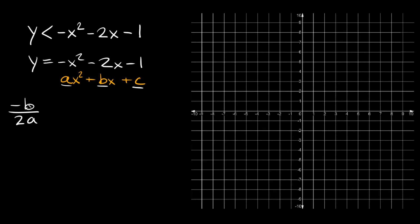Negative b over 2a tells us where our x-coordinate is, so let's plug this in. We have a negative sign, so let's bring that over. What's b in this case? B is negative 2 — remember to include that negative sign, or whatever sign is in front of it. So that's negative 2, over 2a. Here a has a negative sign, so there's basically just a negative 1 for a. So we'll put a negative 1 there.